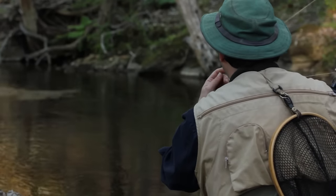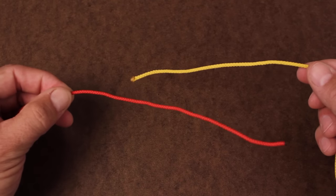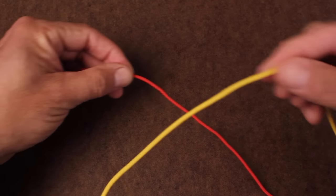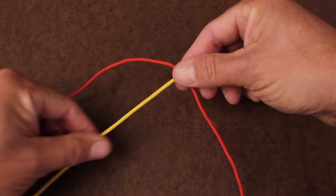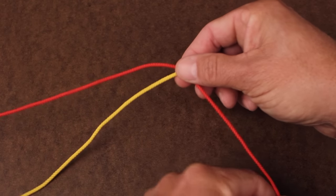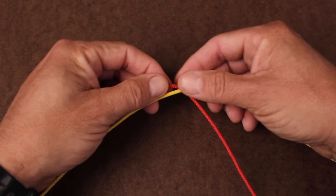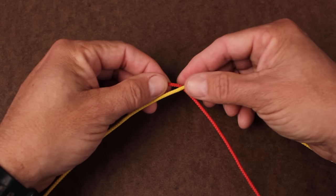To tie a blood knot, overlap 4 to 6 inches of the two line segments being joined. I generally like to start with the lighter weight segment in my right hand and the heavier in my left. Place the right over top of the left.